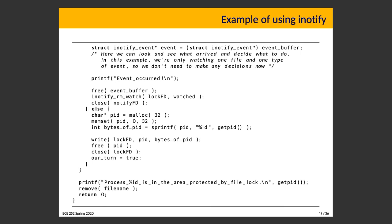Once we've concluded it's our turn, we reach a printf statement saying this process is in the area protected by the file lock — this is where you'd actually do whatever operation you need. Then finally we have a remove call that deletes the lock file, which sends a message to anybody and everybody waiting that the deletion event has occurred, letting the next process take its turn.